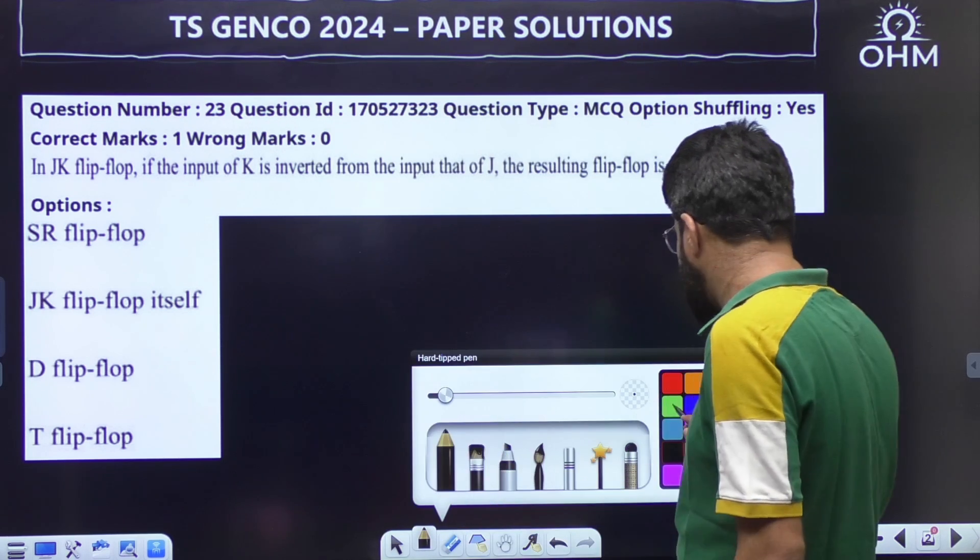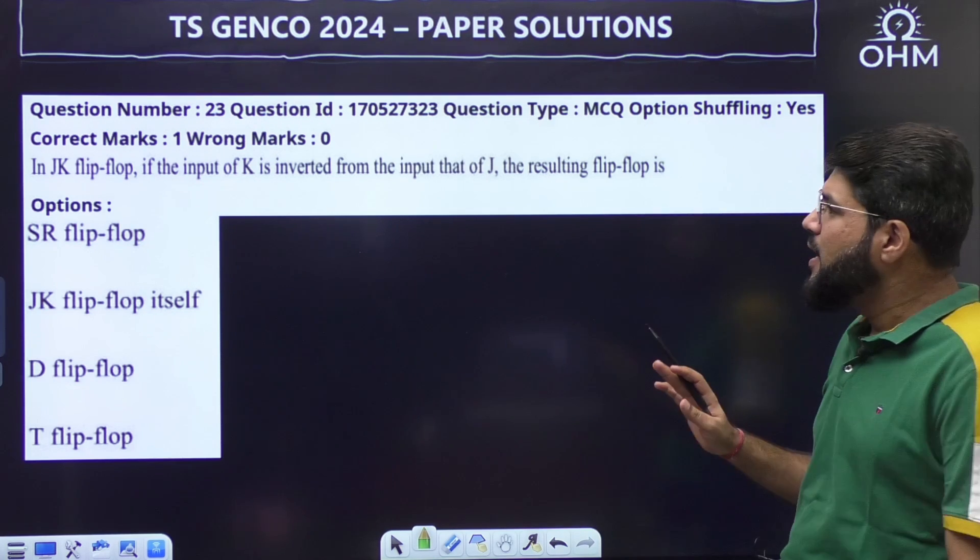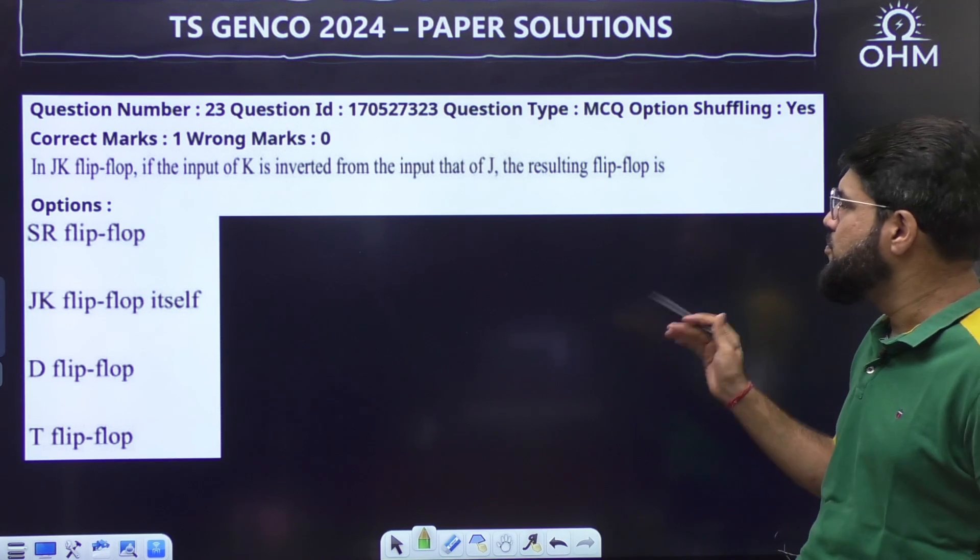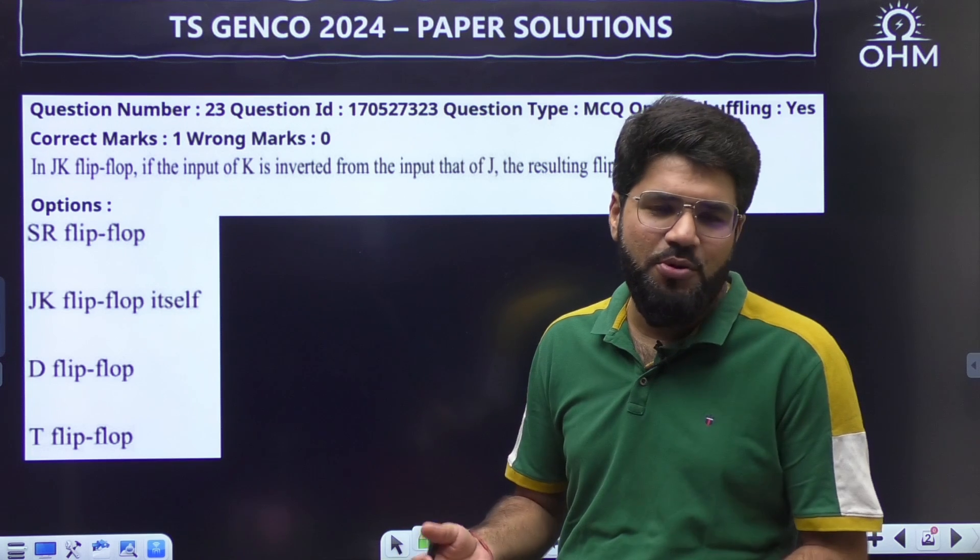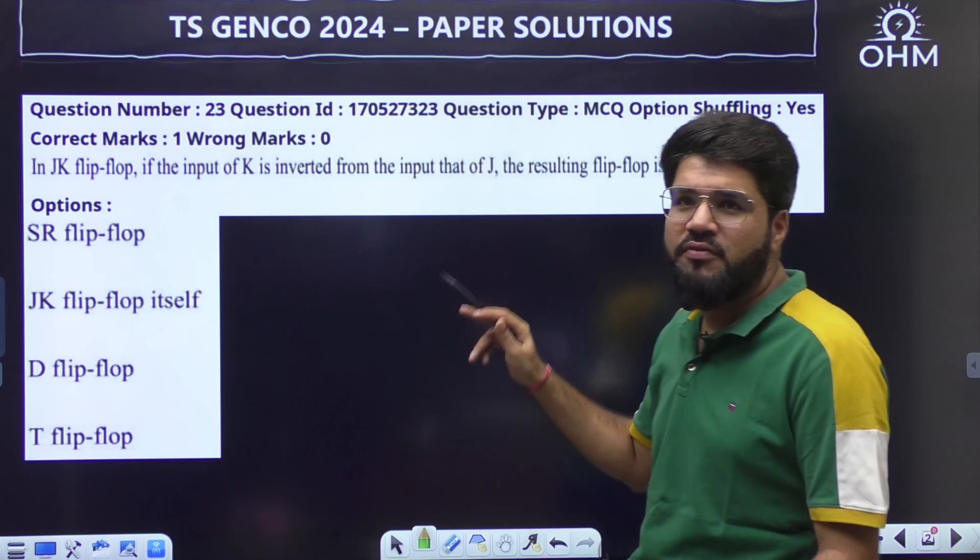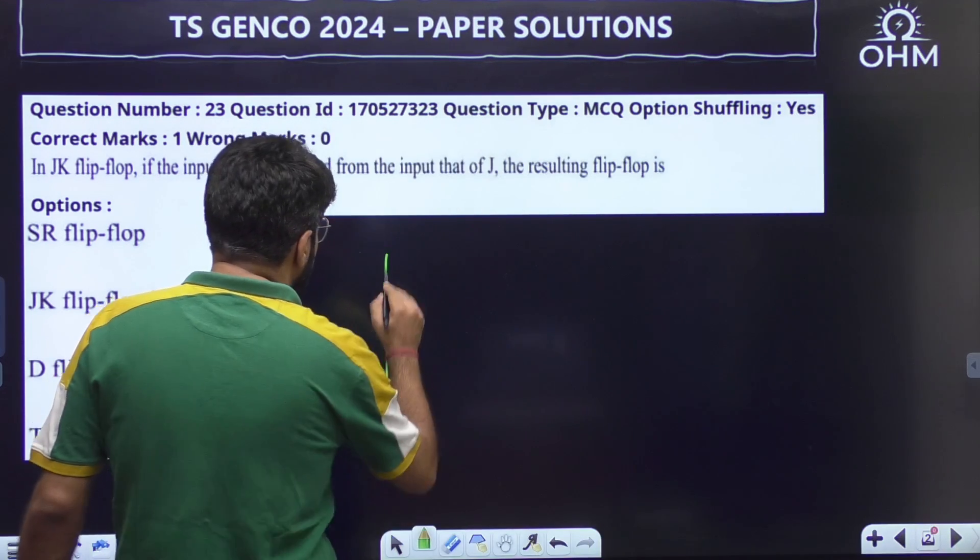There is only one question from Digital that has come up in the paper and that too very straightforward. In a JK flip-flop, if the input of K is inverted from that of the J input, the resultant flip-flop is... If you have studied, it should be there in your notes. It is a D flip-flop. When you invert J and then connect to the K, it is the D flip-flop or else you can see it once again.